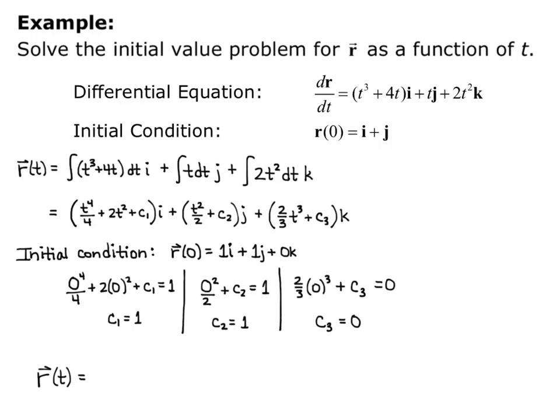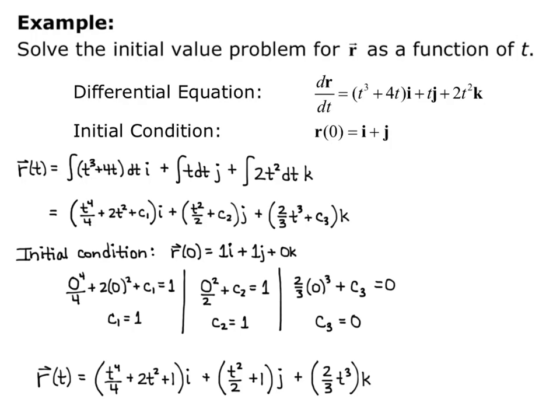Now we can write our final answer. r of t equals the quantity t to the 4th over 4 plus 2t squared plus 1 times i, plus the quantity t squared over 2 plus 1 times j, plus 2/3 t cubed times k. There is our vector function obtained from solving the initial value problem.